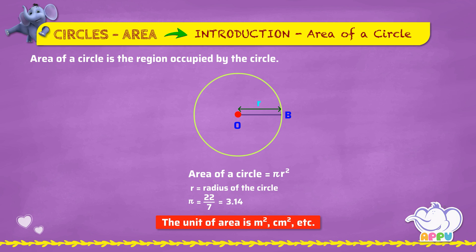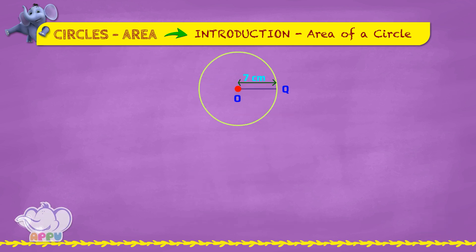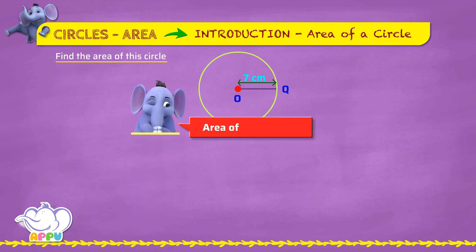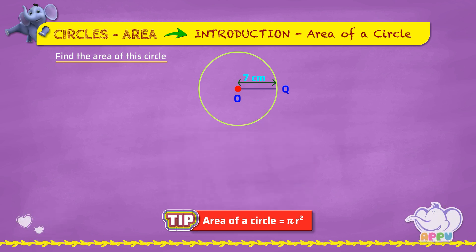Let's look at an example. Find the area of the circle. Area of a circle equals pi r squared. The radius of the circle OQ equals seven centimeters.